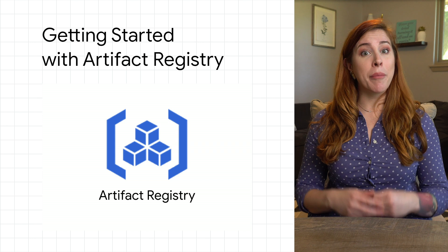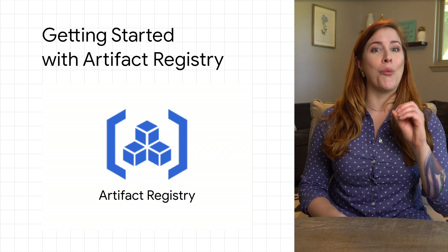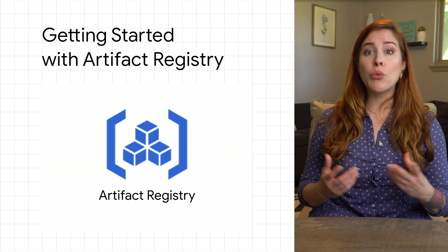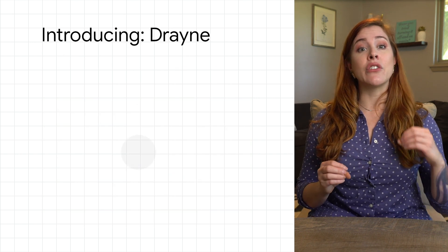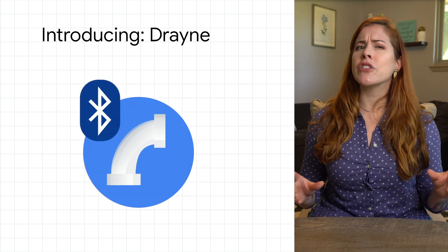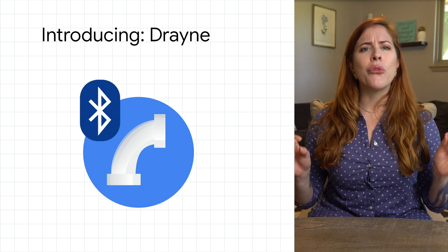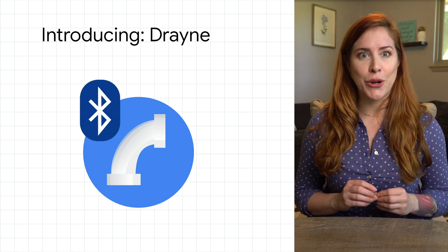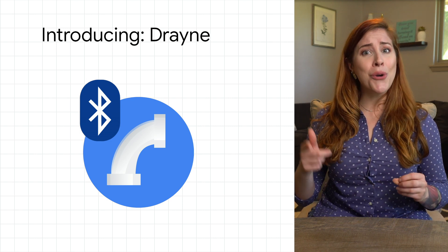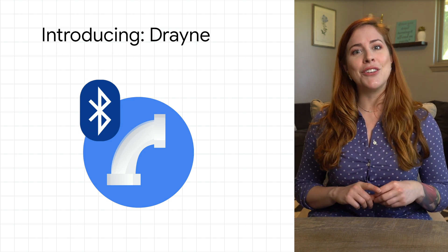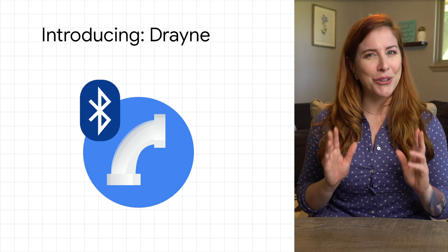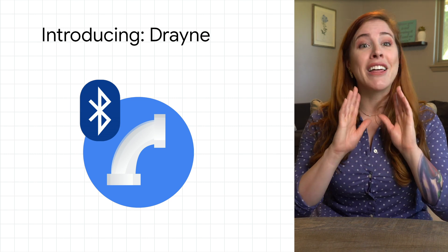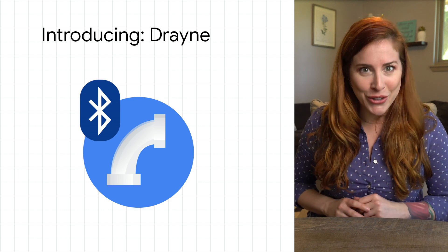After hearing about Artifact Registry, I bet you can't wait to get started. Let's walk through the steps using a hypothetical company I've created: Drain. Drain is autonomous, artificially intelligent, voice-enabled plumbing for the modern home. I'll make Drain part of your pipeline using Artifact Registry in the software pipeline. Now if you don't think that's a little bit funny, this is going to be a long video series for you.